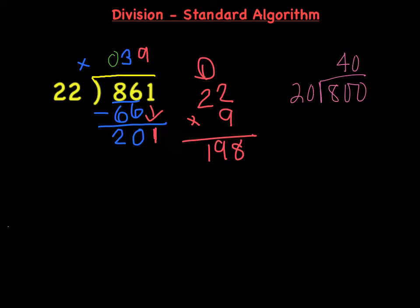So if I had 201 things, and I had to split them between 22 people, each person would get 9 for a total of 198, and then I'm going to subtract off to see what my remainder is going to be.